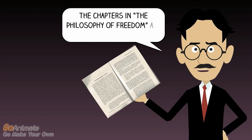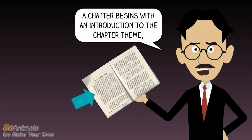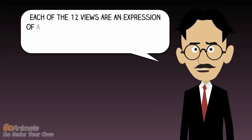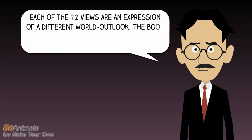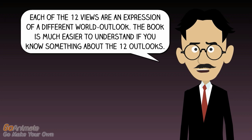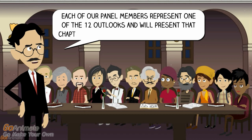The chapters in the Philosophy of Freedom are structured in a certain way. A chapter begins with an introduction to the chapter theme, which is followed by 12 views of the theme. Each of the 12 views is an expression of a different world outlook. The book is much easier to understand if you know something about the 12 outlooks. Each of our panel members represents one of the 12 outlooks and will present that chapter view in our study group discussion.